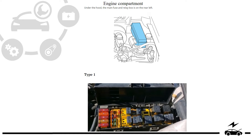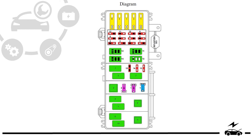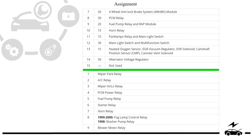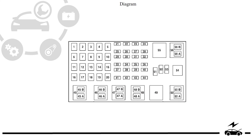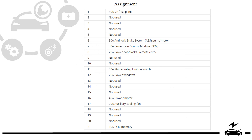Designation. Engine compartment fuse box. Location. Type 1 — design and diagram. Designation. Design. Fuse box Type 2. Photo. Diagram. Design. Assignment.